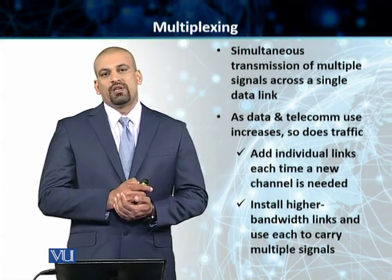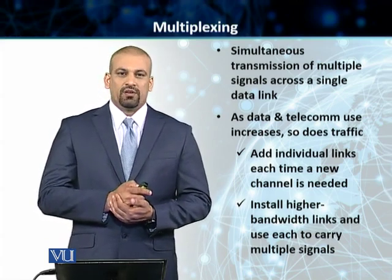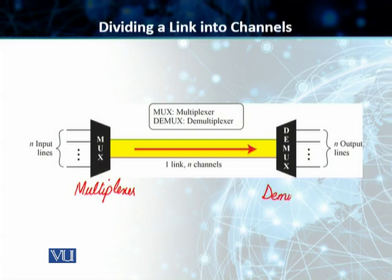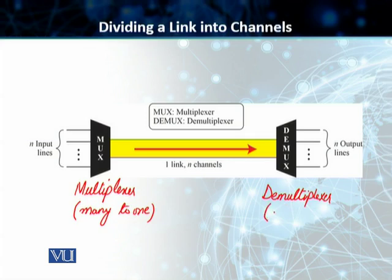Let's understand this first concept of multiplexing a little further. As you can see, in this particular case we are using two pieces of hardware. The first one is on the sending end — that is a MUX or a multiplexer. And then on the receiving end, we have a DMUX or a demultiplexer. Our multiplexer is a many-to-one device, and our demultiplexer is a one-to-many device.